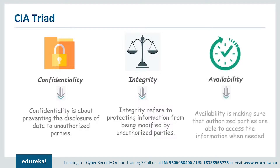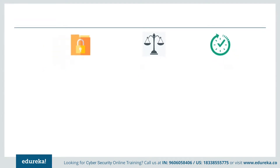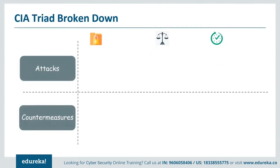The final component of the CIA triad is availability — the assurance that systems and data are accessible by authorized users whenever they need it. If we cannot access the data whenever we need it, we are definitely not secure. Now let's take a look at what kinds of attacks can be made on the CIA triad in the real world and how we can defend against them.